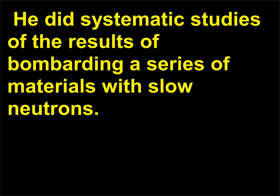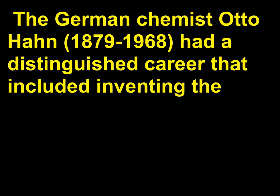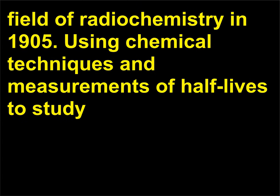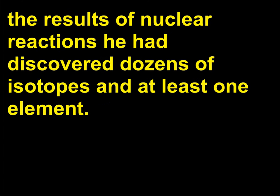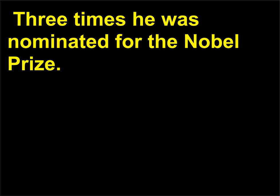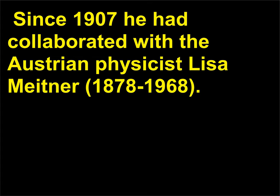The German chemist Otto Hahn (1879–1968) had a distinguished career that included inventing the field of radiochemistry in 1905 — using chemical techniques and measurements of half-lives to study the results of nuclear reactions. He had discovered dozens of isotopes and at least one element, and was nominated for the Nobel Prize three times. Since 1907 he had collaborated with the Austrian physicist Lise Meitner (1878–1968). The teamwork between a physicist and a chemist was a great advantage.